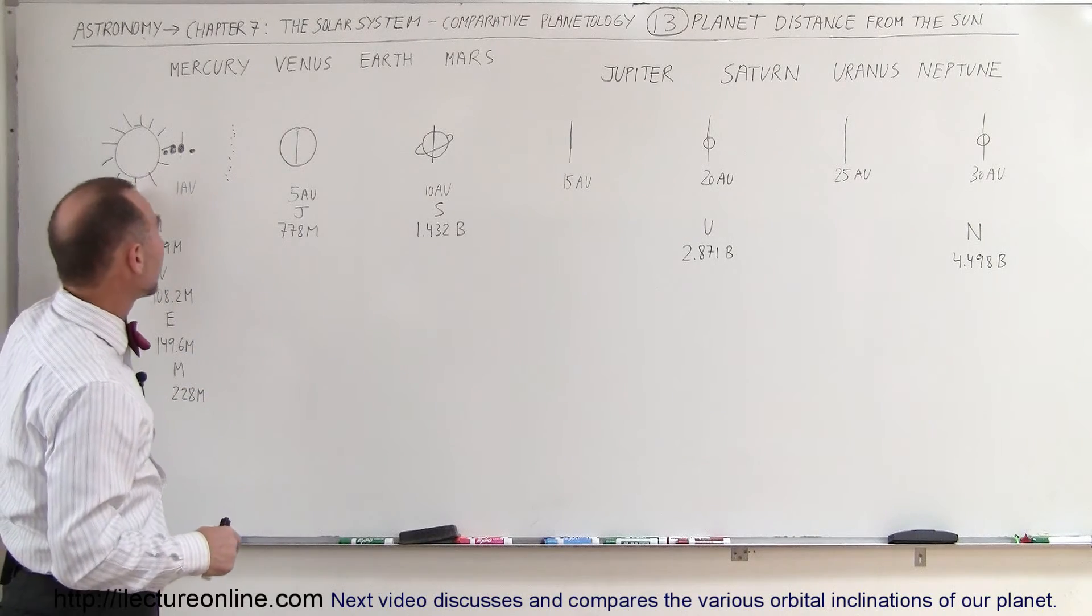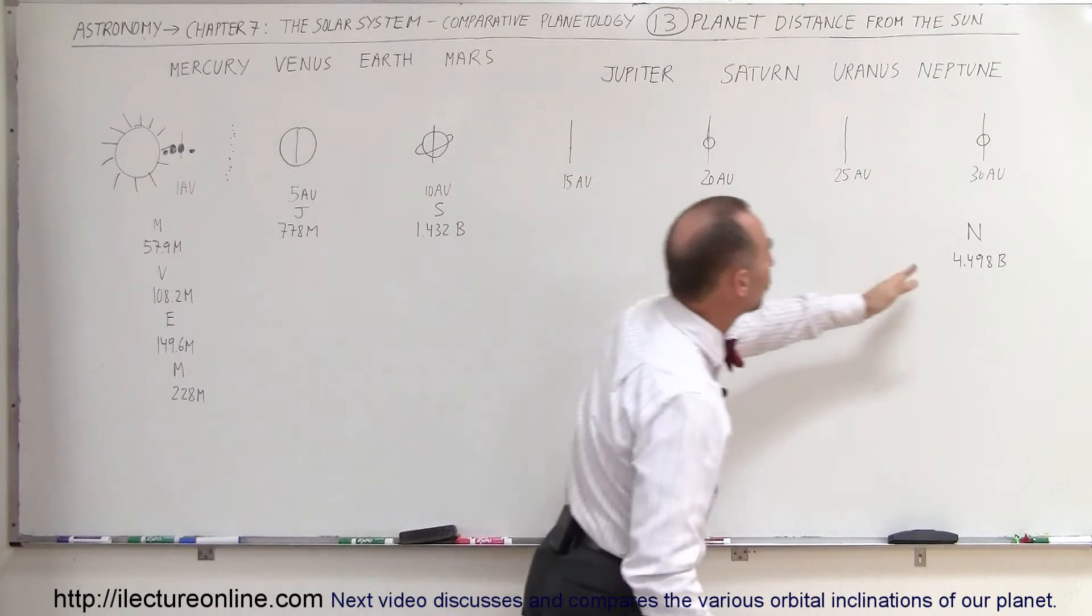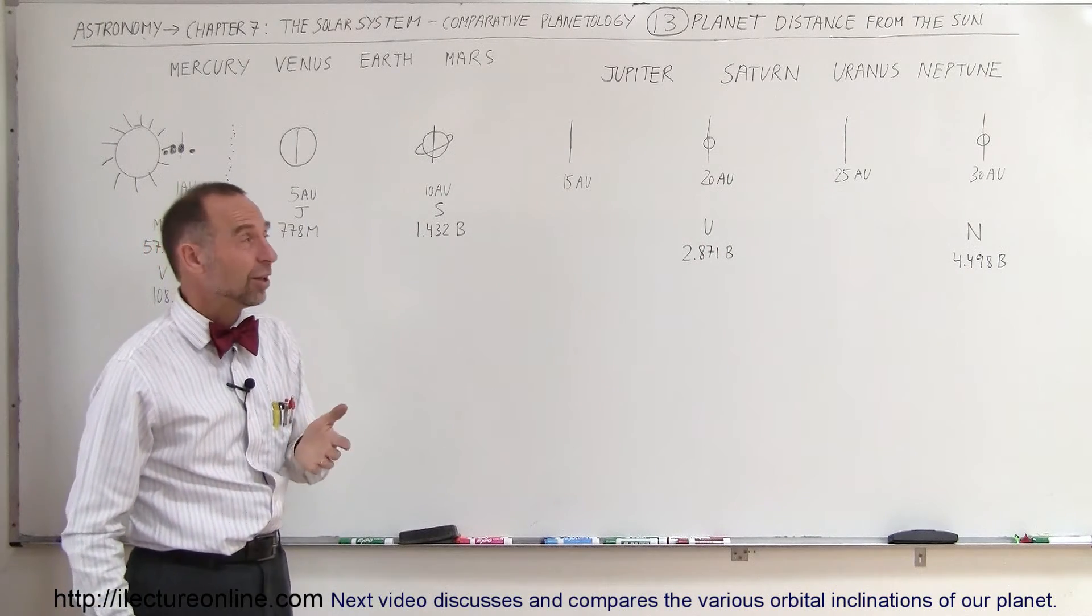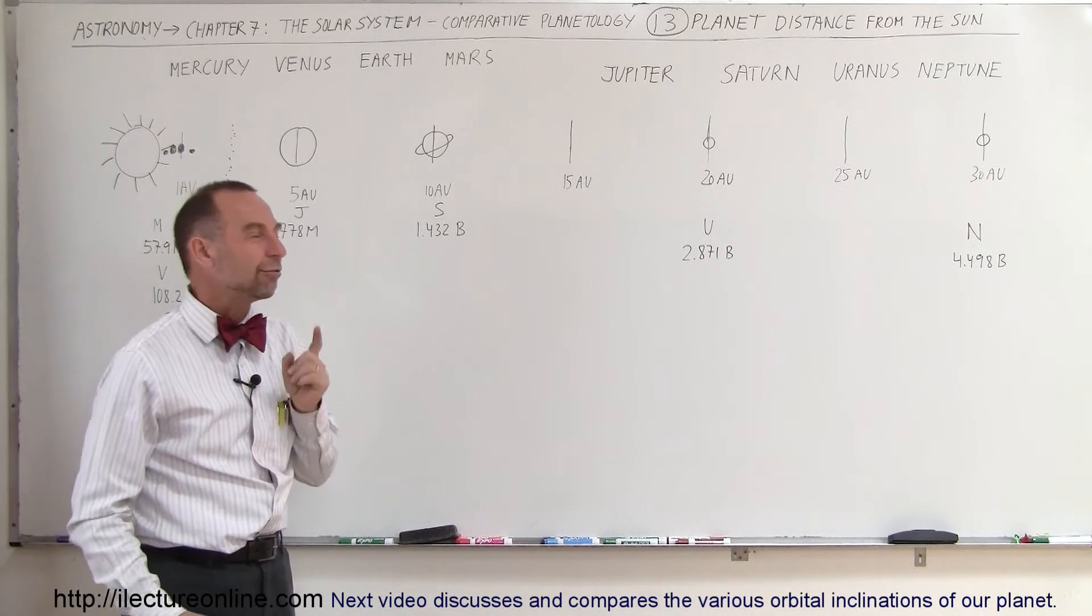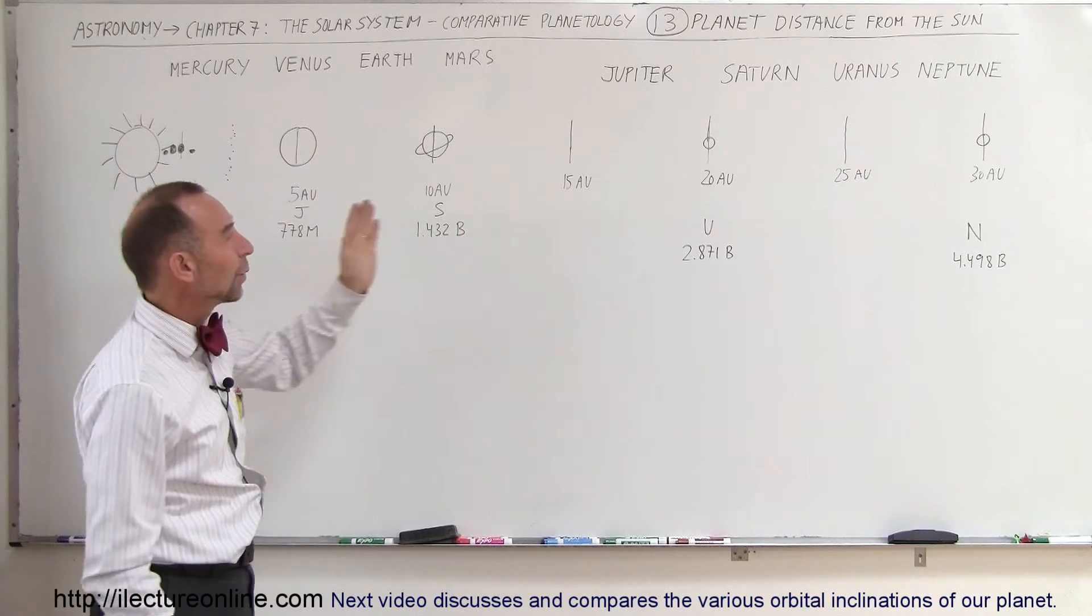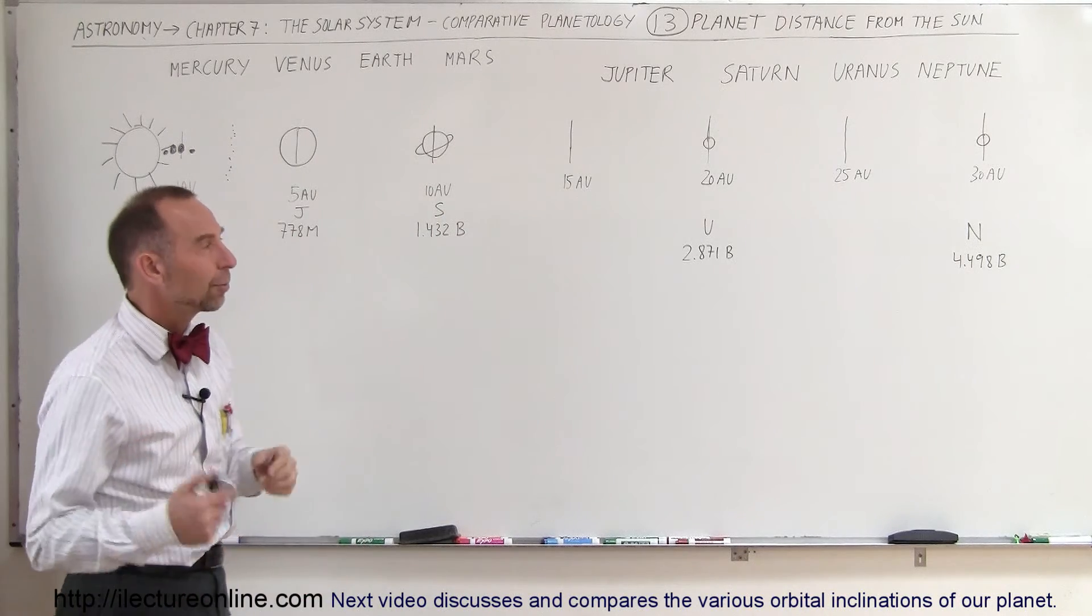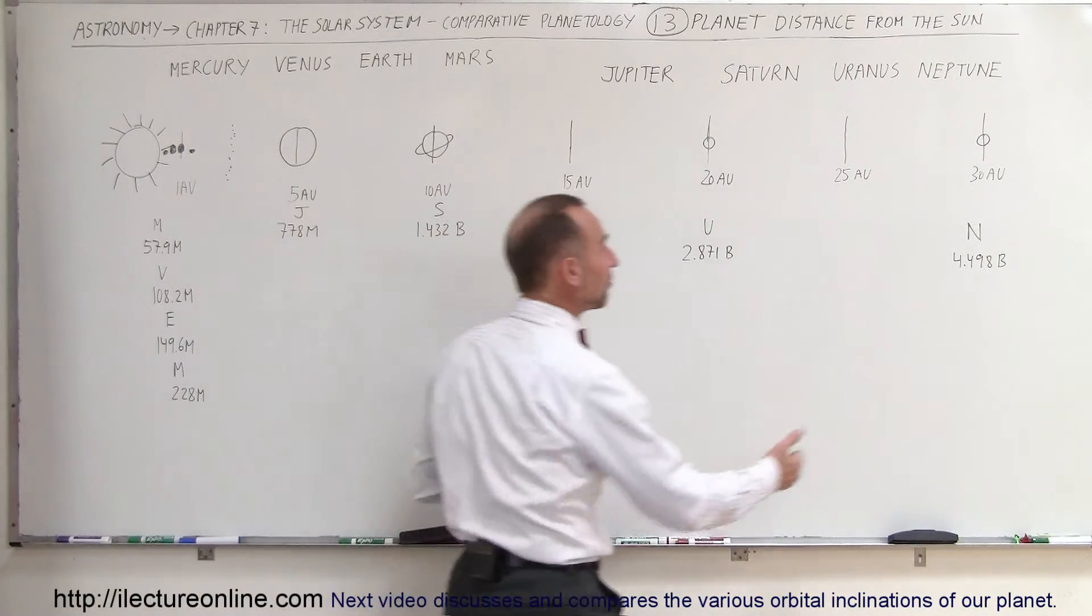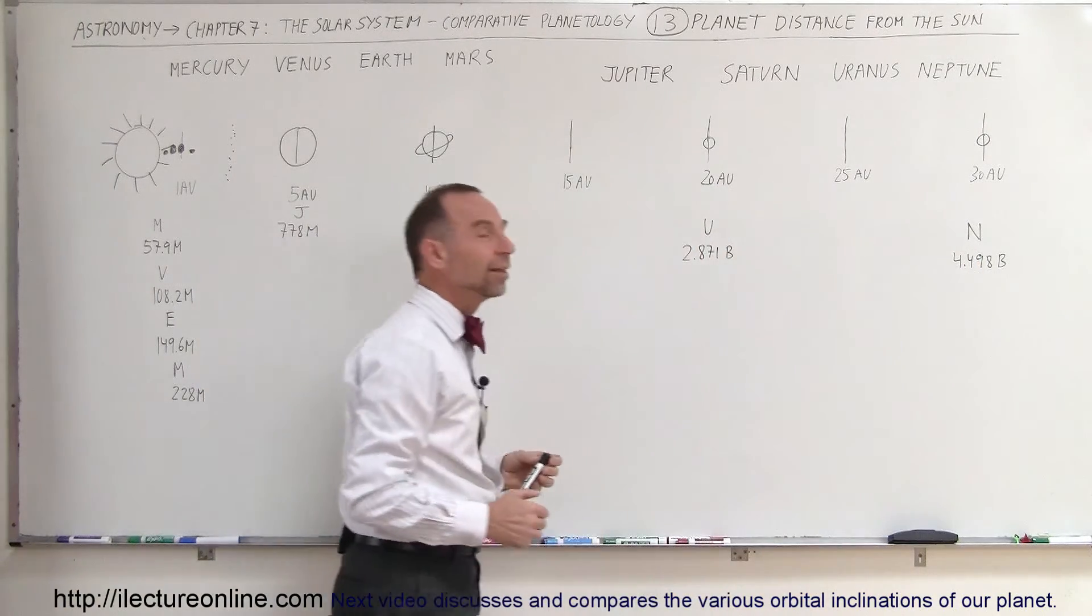It takes more than four hours for sunlight to travel from the Sun all the way out to Neptune. And light travels at 186,000 miles per second. So you can imagine, it takes more than four hours for light to travel all the way out to Neptune. Those are absolutely enormous distances, and also the temperatures are extremely frigid, extremely cold that far out.